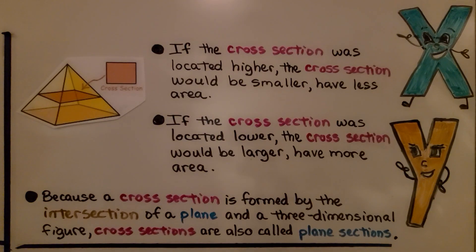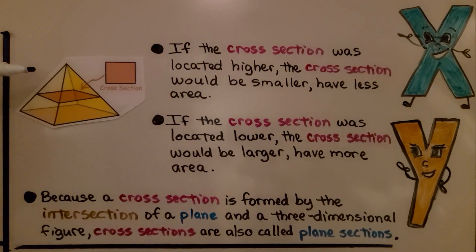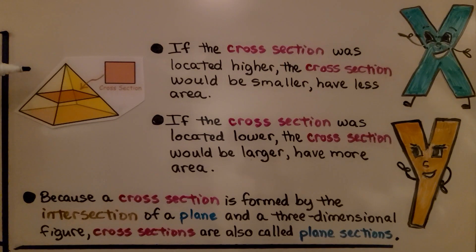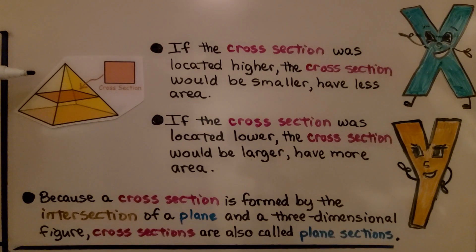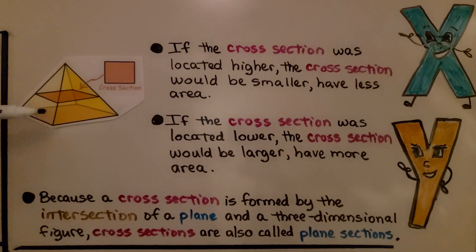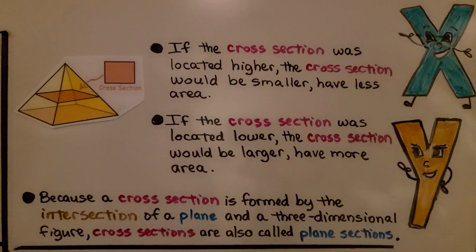Or on an angle coming through the center and make a hexagon. If the cross-section was located higher, the cross-section would be smaller — it would have less area. And if the cross-section was located lower, the cross-section would be larger — it would have more area. Because a cross-section is formed by the intersection of a plane and a three-dimensional figure, cross-sections are also called plane sections.